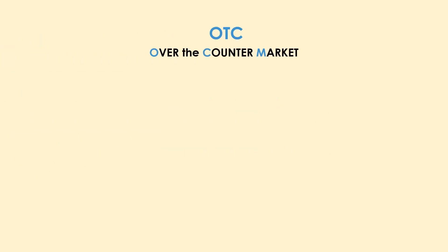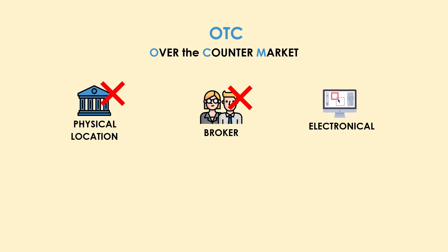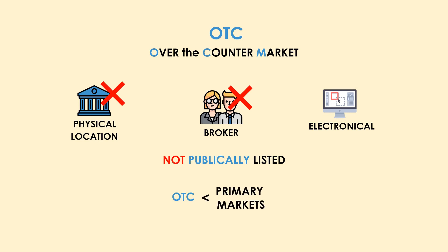OTC markets, or over-the-counter markets, do not have any physical location, nor do they require any broker to operate. Every trade and deal is done electronically — people sit in front of a computer screen and deal between two parties without any influence of a broker or financial intermediary. One thing to note is that OTC stocks are not publicly listed on any stock exchanges like the NYSE.